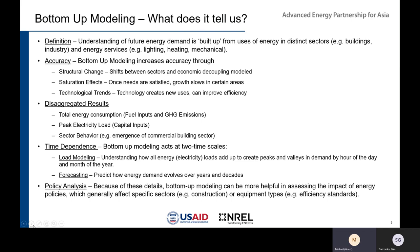A very typical example of saturation is that as household income increases, more households will purchase and use refrigerators. But generally speaking, people only need one refrigerator, so at some point that energy use stops growing. Finally, bottom-up modeling improves accuracy by understanding technological trends. Technology creates new uses sometimes, but it can also improve efficiency — a great example being the general transition throughout the world from incandescent lamps to CFLs and LEDs, which has really reduced the intensity of electricity for lighting.